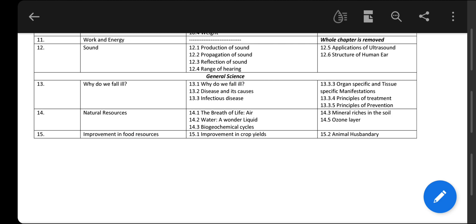Coming to Chapter 15, Improvement in Food Resources, topic 15.1, improvement in crop yield you have to study. Crop management and crop protection all topics are included. The second part, animal husbandry, is excluded from the syllabus.